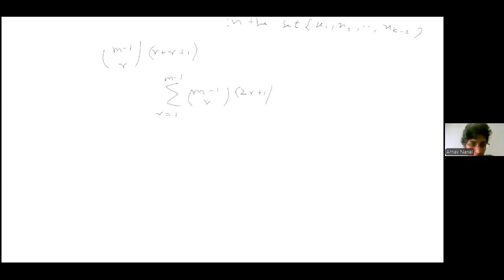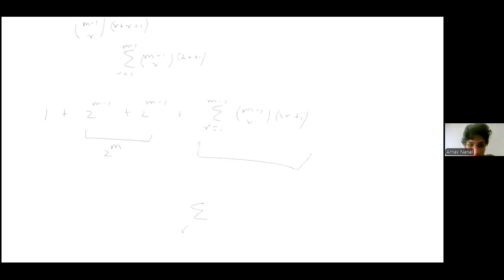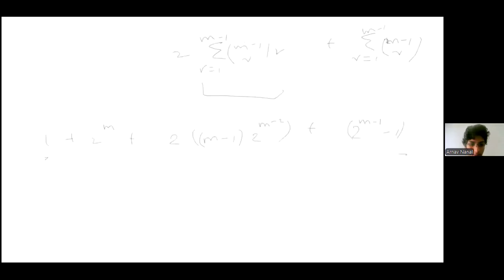The total number of sequences is 2 · 2^{m-1} plus the sum from r=1 to m-1 of C(m-1, r) · (2r+1). This simplifies by the combinatorial identity: the sum of C(m-1, r)·r equals (m-1)·2^{m-2}, and the sum of C(m-1, r) equals 2^{m-1} minus 1 (excluding r=0). Combining, this gives 2^{m-1}·(m+2).